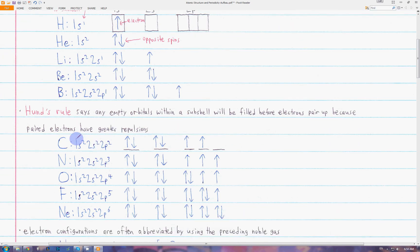In carbon, the next electron, instead of pairing up with this guy, will go into an unfilled orbital within the 2p subshell. Same for nitrogen. In the p subshells, the first three electrons will occupy separate orbitals.